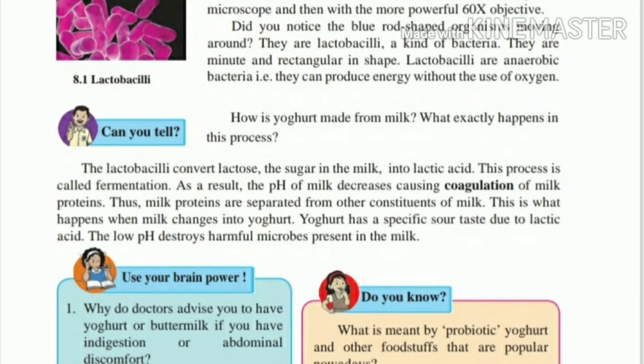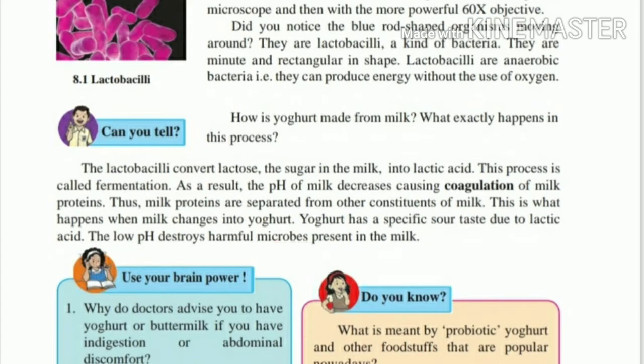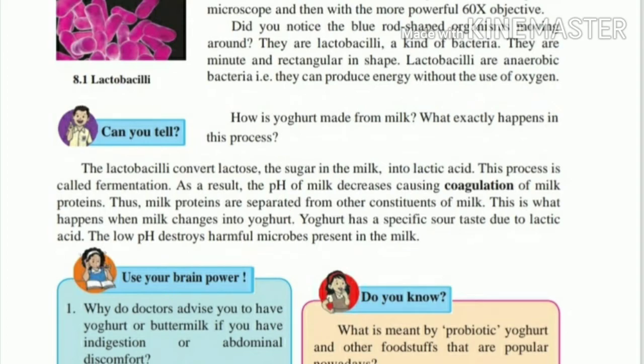The low pH also destroys harmful microbes present in the milk. Low pH means acidic conditions — pH less than 7 is acidic. Because of this acidic nature, harmful microorganisms in the milk are destroyed and killed, while the useful Lactobacilli bacteria survive.